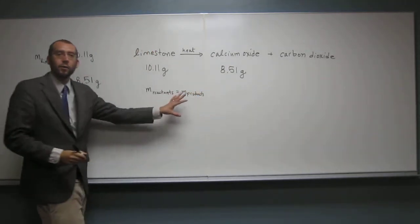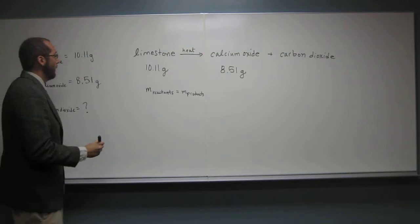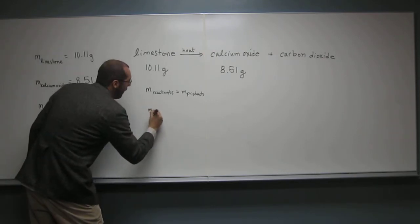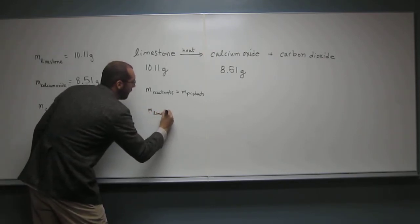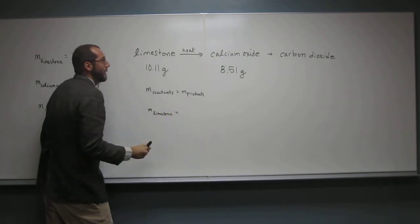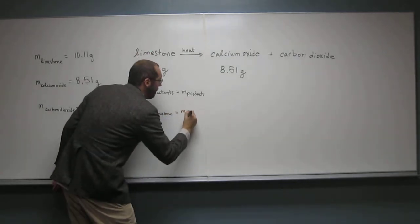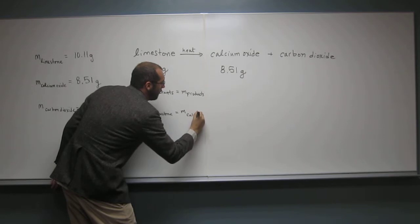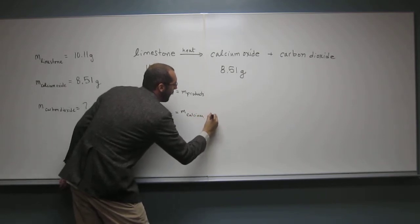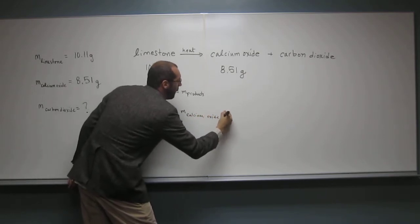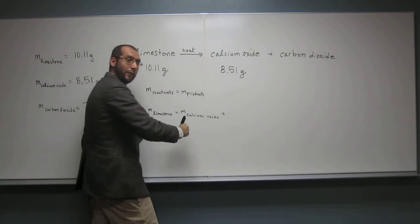the mass of the reactants has to equal the mass of the products. So the mass of the limestone has to equal the mass of the calcium oxide plus, right? Does that make sense? The mass of what? Help me out.